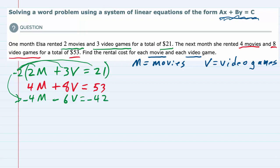It's important that we distribute that to every term in the equation. We can now add these two equations, and in doing so, that first term is going to cancel out the 4M and the minus 4M. That's why we multiplied the top by minus 2, and the second term, 8V minus 6V, gives me a 2V equals 53 minus 42.